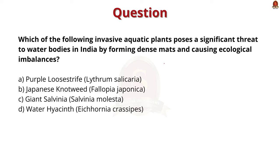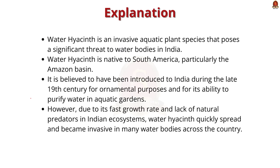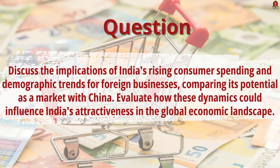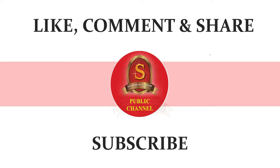Next question: which of the following invasive aquatic plants poses a significant threat to water bodies in India by forming dense mats and causing ecological imbalance? The correct answer is option D — water hyacinth. Water hyacinth is native to South America, particularly the Amazon Basin. It is believed to have been introduced to India during the late 19th century for ornamental purposes and for its ability to purify water in aquatic gardens. However, due to its fast growth rate and lack of natural predators in Indian ecosystems, water hyacinth quickly spread and became invasive. Today's main practice question is displayed — try to answer it in the comments. Thank you for watching and don't forget to subscribe to Shankara's Academy YouTube channel.